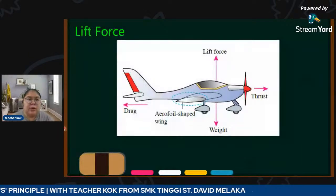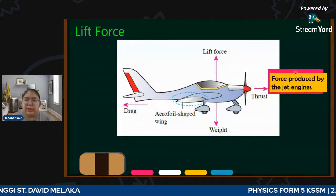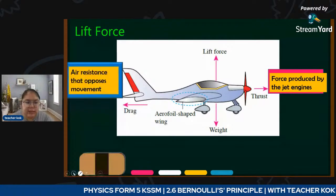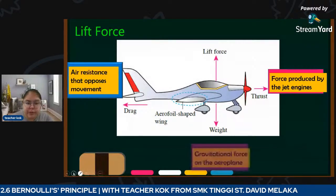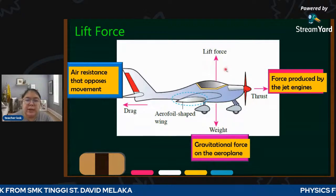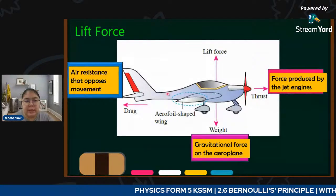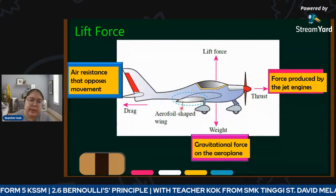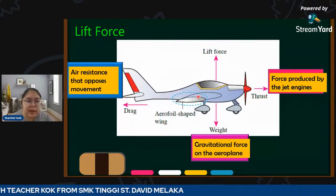Now we talk about lift force. There is thrust - the force produced by the jet engine. Then there is drag - air resistance that opposes movement. There is weight - gravitational force on the aeroplane. Finally there is lift force. We need to relate the aerofoil shape of the aeroplane's wings with the Bernoulli Principle to understand how lifting force is produced.